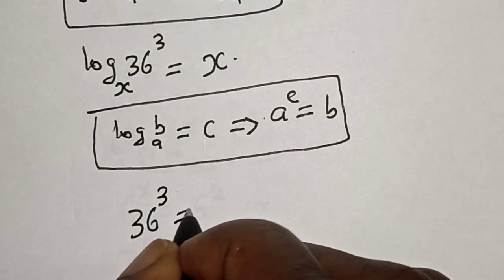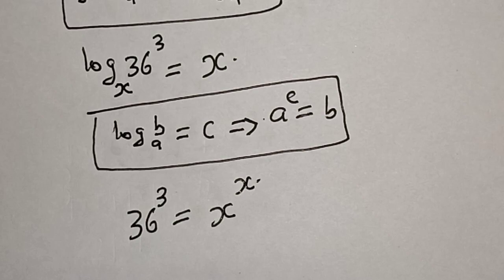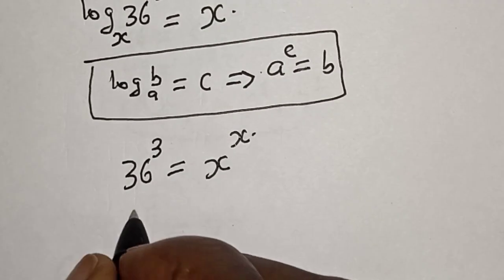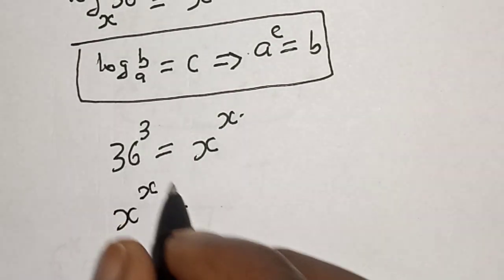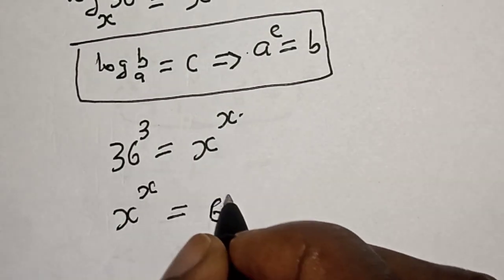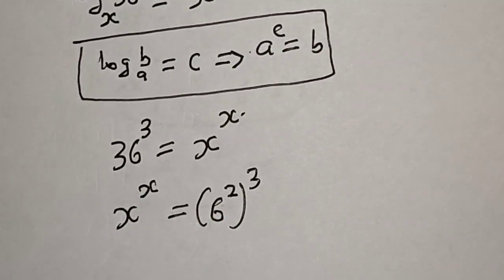Now x raised to power x is equal to 36. 36 can be written as 6 squared raised to power 3.